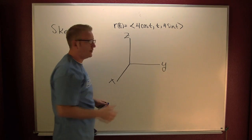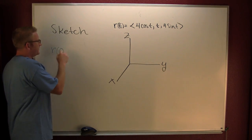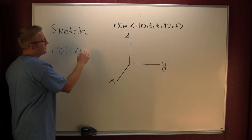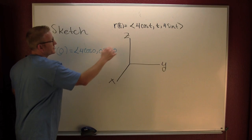Good times. Let's go ahead and graph this guy. Where is it at time zero? r(0). This is 4 cosine 0, 0, sine 0, or four times.